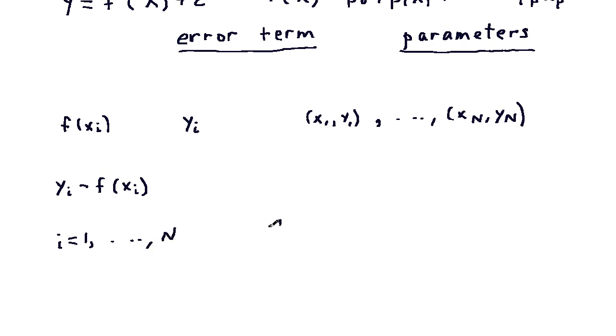So we get the sum, i equals 1 to n, y i minus f of xi squared. So we have a sum of squares. This is called the residual sum of squares.